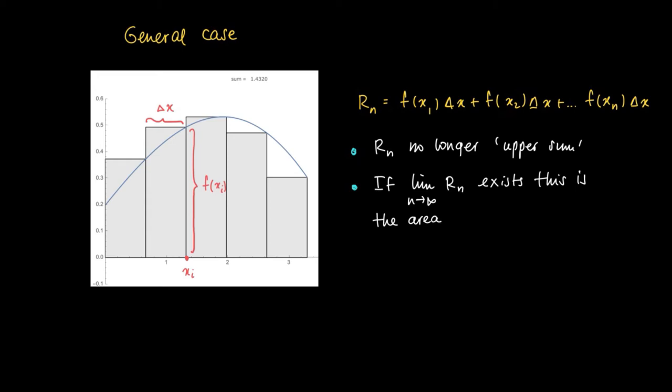And by doing so, if the area enclosed by R_n converges—so if the limit as n goes to infinity of R_n exists—this will be called the area enclosed, the surface area enclosed by the graph of the function and the lines y equals 0, x equals a, and x equals b.